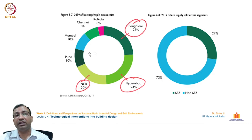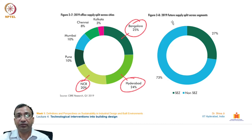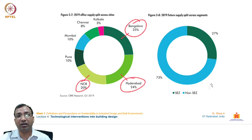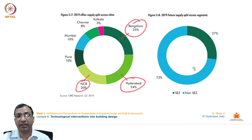Looking at major consumer cities, for office supplies, Bangalore consumes 25 percent, Hyderabad 24 percent, and NCR 20 percent. In future supply split across segments, SEZ beds account for close to 27 percent — about one quarter — and the government needs to focus on non-SEZ manufacturing units so they can also enjoy the benefits and relaxations that their SEZ counterparts enjoy.